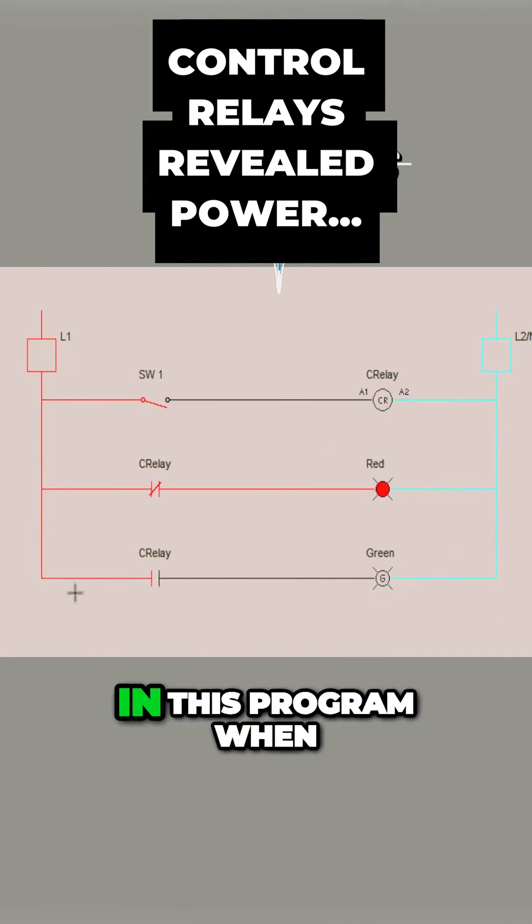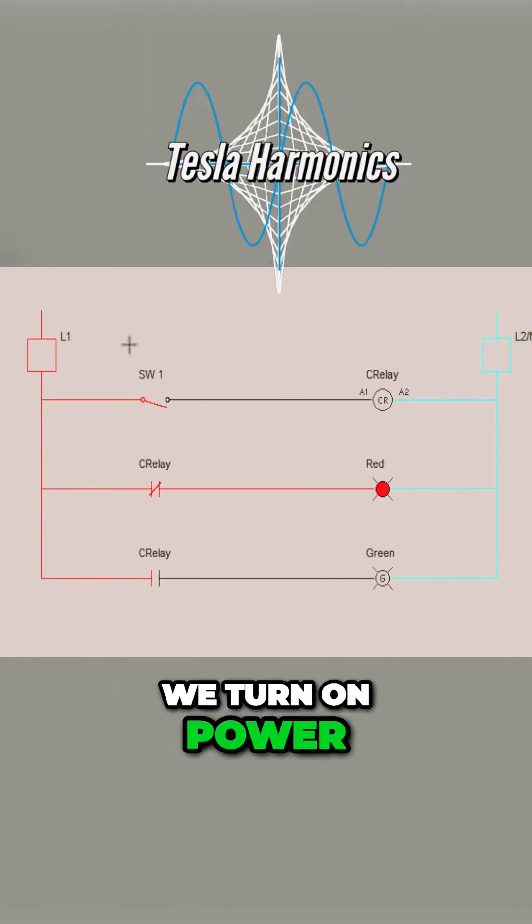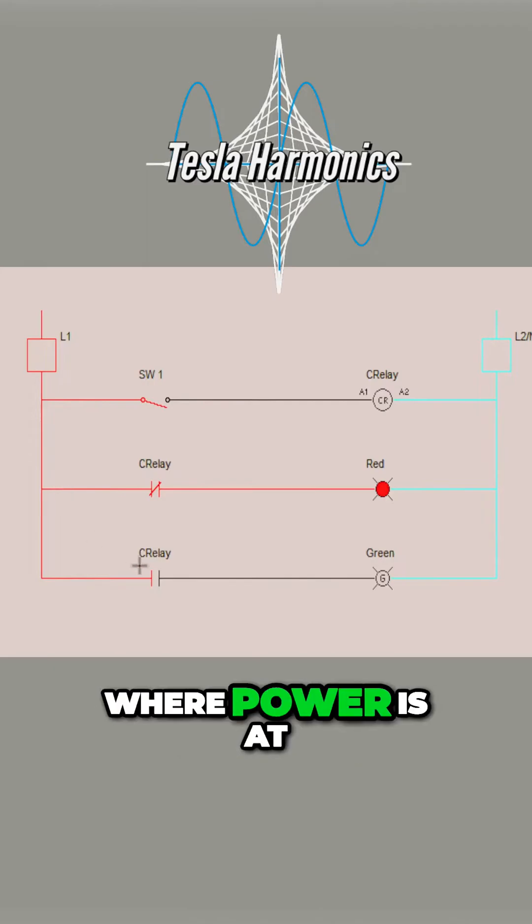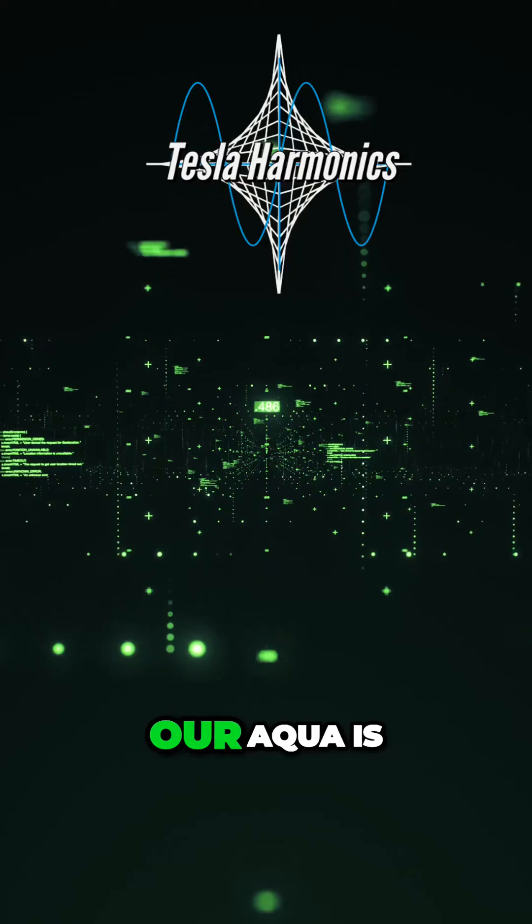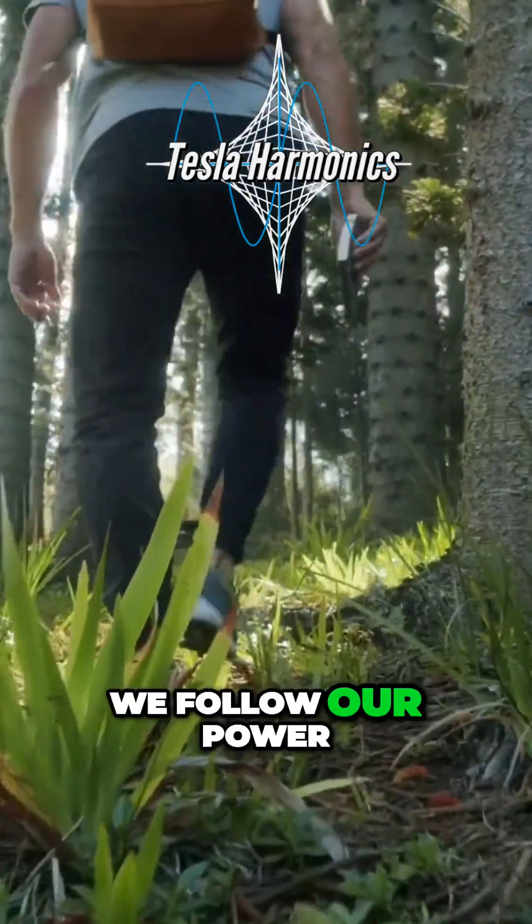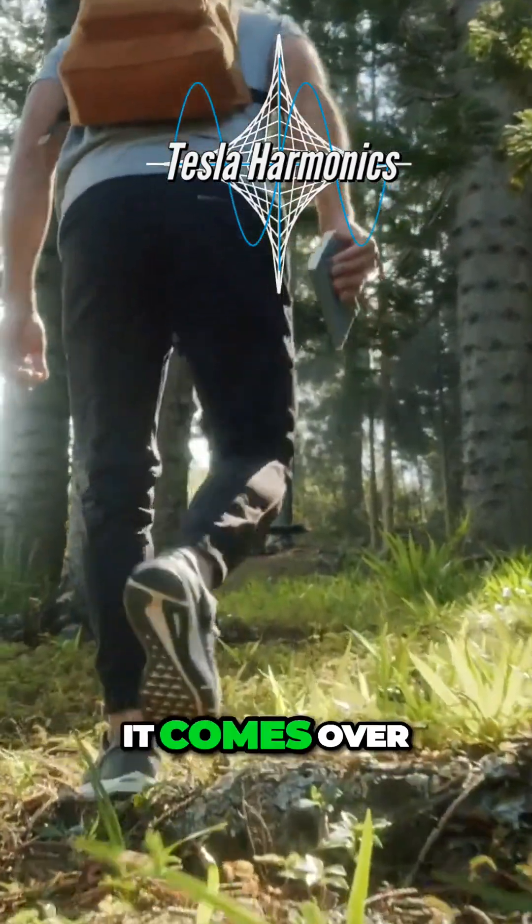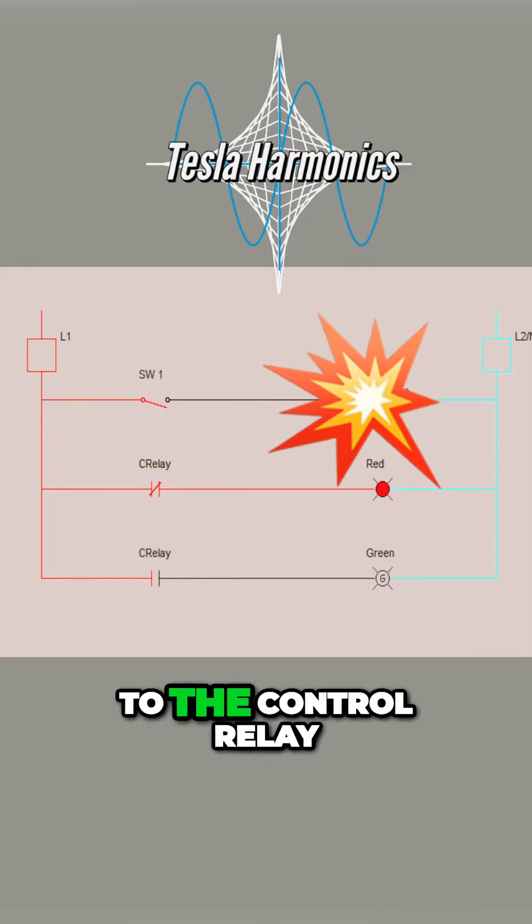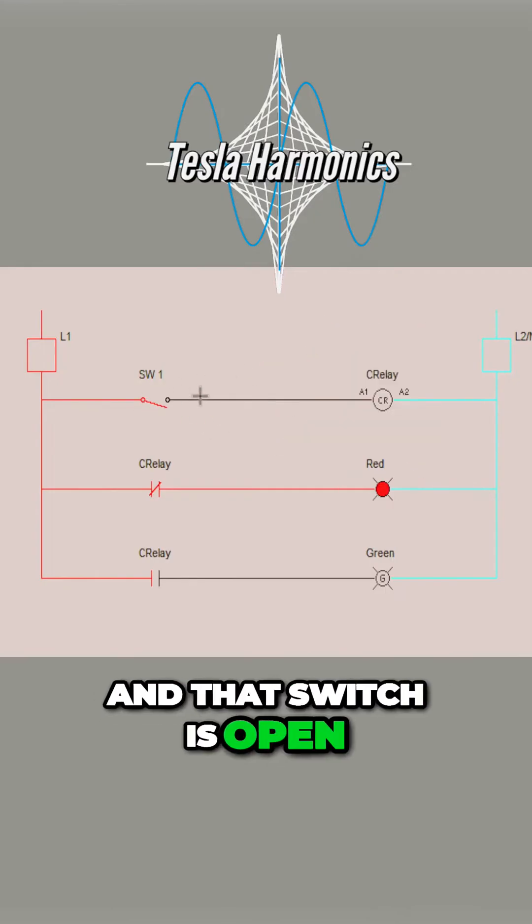Remember that we said in this program when we turn on power, our red is where power is at, our aqua is where the neutral is. If we follow our power coming in, it comes over and it comes to this switch going to the control relay, and that switch is open.